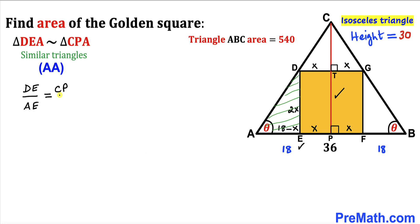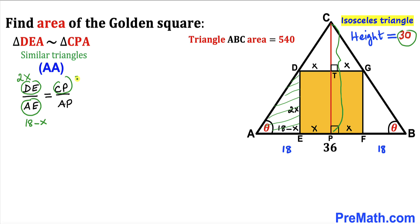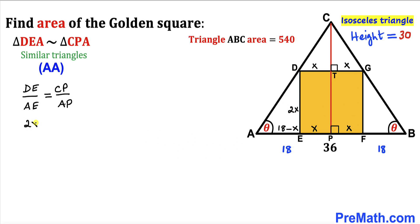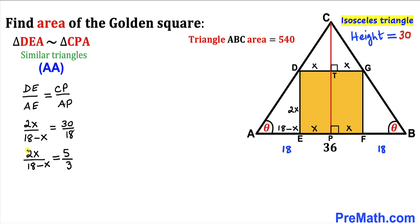From the similarity, we write the proportion: DE divided by AE equals CP divided by AP. Substituting the values: DE is 2x, AE is 18 minus x, CP is the height of triangle ABC which is 30, and AP is 18. So we have 2x divided by (18 minus x) equals 30 divided by 18, which simplifies to 5 divided by 3.